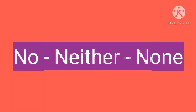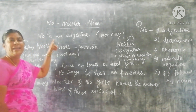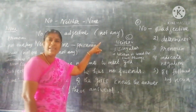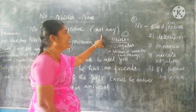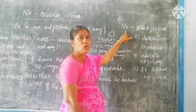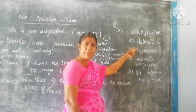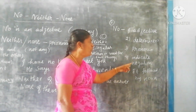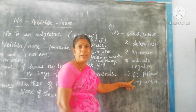What is the meaning of no? No is a negative adjective. It means not any. The word no can be an adjective, a determiner, or a pronoun. It indicates the negative.